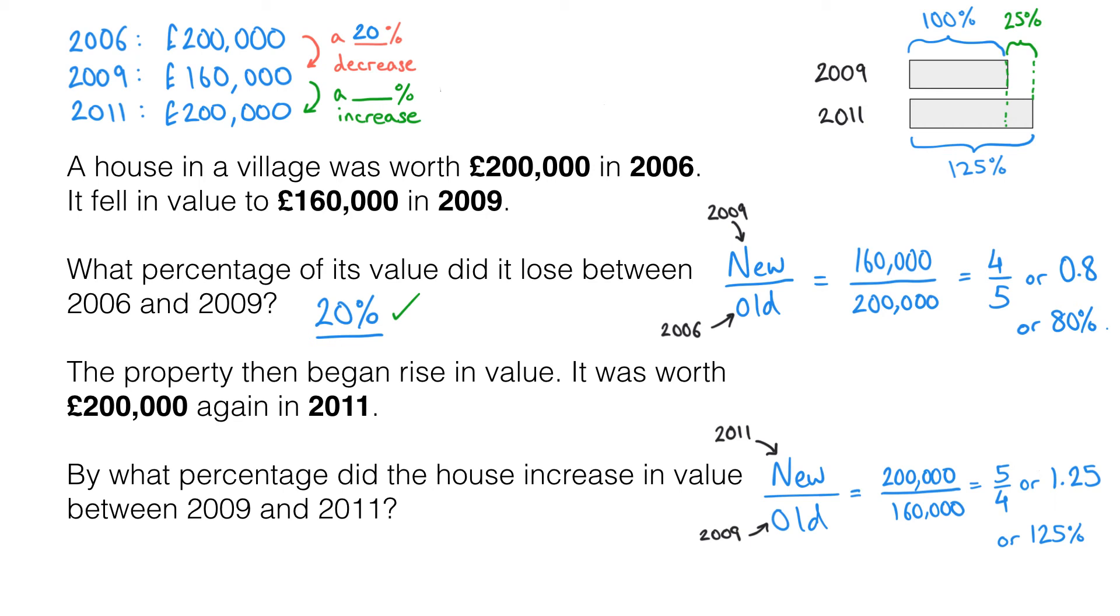We can see this in the new diagram I've got in the top right hand side. The original value in 2009 was this much. In 2011 it had gone up and it was 125% of the old value, so a greater amount, and that is an increase of 25% of the original value. So there is our answer.